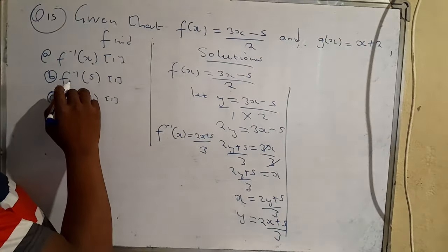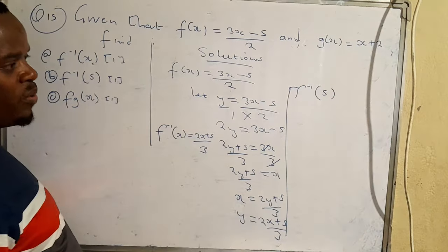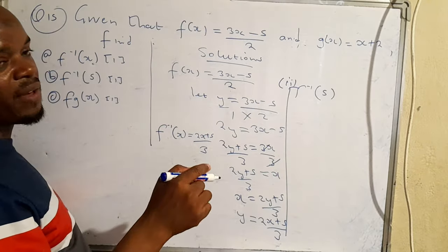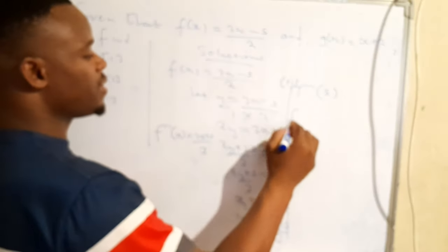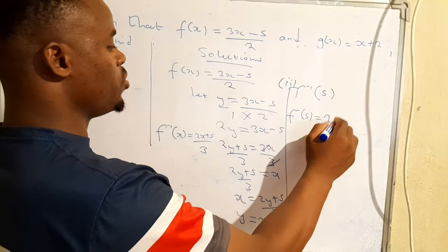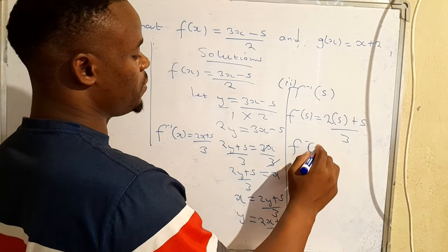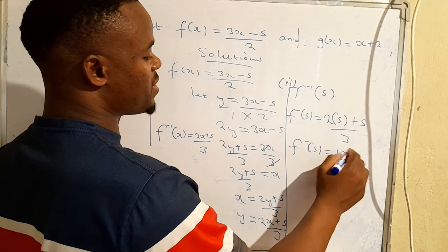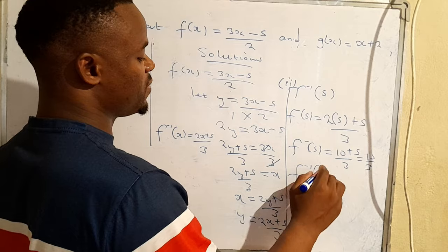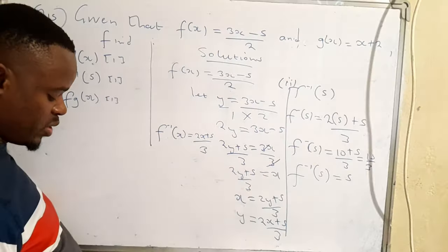For part two, find f⁻¹(5). We already found the inverse, so we simply plug in x = 5: f⁻¹(5) = (2×5 + 5)/3 = (10 + 5)/3 = 15/3 = 5. So f⁻¹(5) = 5.